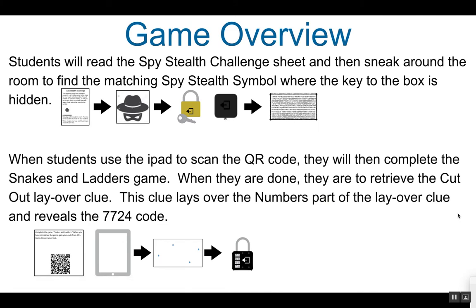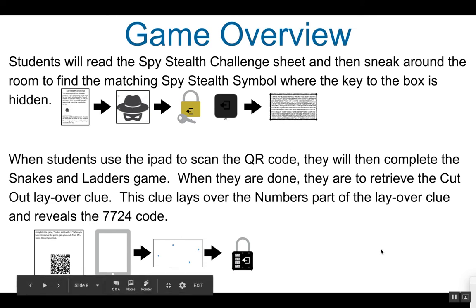How the game should flow: students will read the Spy Stealth Challenge Sheet and then sneak around the room to find the matching spy stealth symbol, which is where their key will be hidden to the small box with the key lock. When they unlock the small box, they should be able to retrieve the numbers clue for the layover. When students use the iPad to scan the QR code, they will complete the snakes and ladders game. When they are done, they retrieve the cutout layover clue from you. This clue lays over the numbers part and should reveal the numbers 7724, which is the code for the four-digit lock.